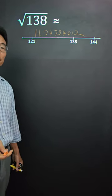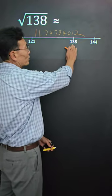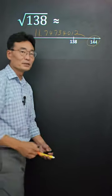First, we need to find a perfect square that's closest to 138, and in this case it happens to be 144.